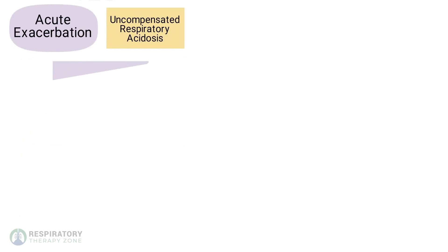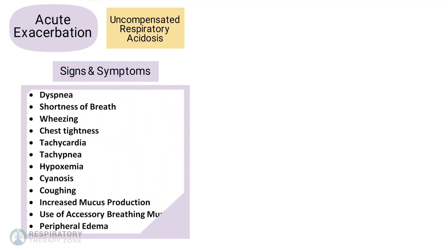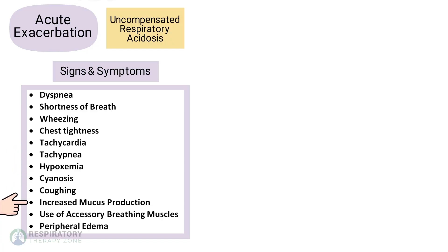And now for some other signs and symptoms of an acute exacerbation, which involve worsening symptoms such as dyspnea, shortness of breath, wheezing, chest tightness, tachycardia, tachypnea, hypoxemia, cyanosis, coughing, increased mucus production, use of accessory muscles while breathing, and peripheral edema.